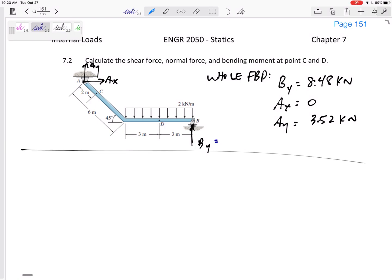So now once I've got that, let me draw that. This is 8.48. This is zero. And this is 3.52. Once you draw that, then you're ready to, or once you do the whole free body diagram, then you're ready to cut and solve for the internal N, V, and M.